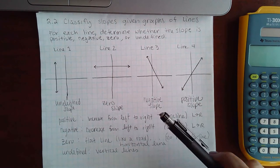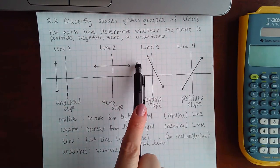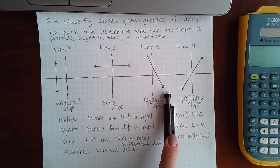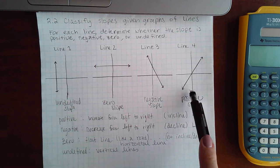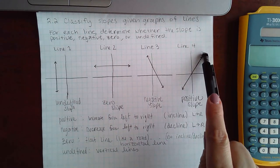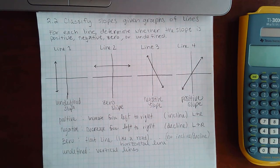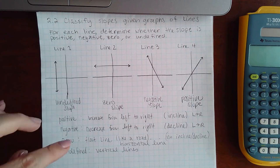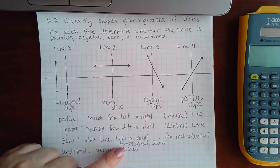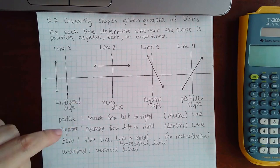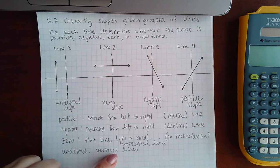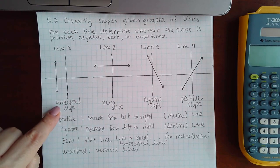So you can read the slanted ones by tracing it from left to right. If it goes downward, it's negative. And if you start from the left and go to the right and it goes up, positive. But the ones that are not slanted, you have to remember that the horizontal lines will have a zero slope and the vertical lines will have an undefined slope.